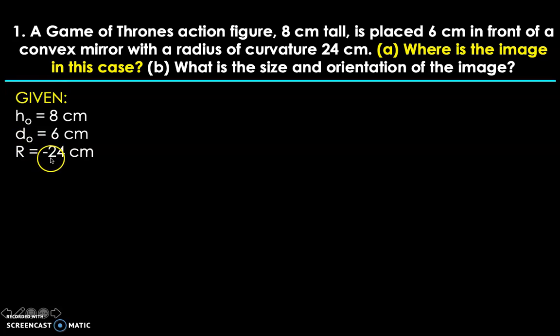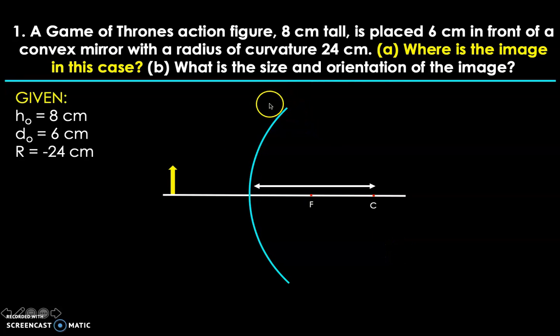But don't forget that it has to have a negative sign. Why? Simply because we have a convex mirror. And just a reminder, the radius of curvature of a convex mirror is behind the reflective side of the mirror. If you extend a convex mirror as a full circle or sphere, the radius would be behind the reflective side of the convex mirror, so it has to be negative.